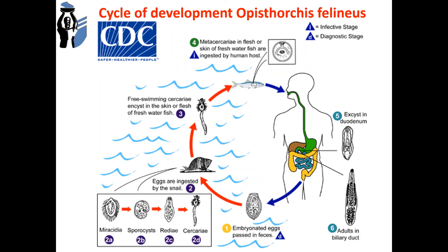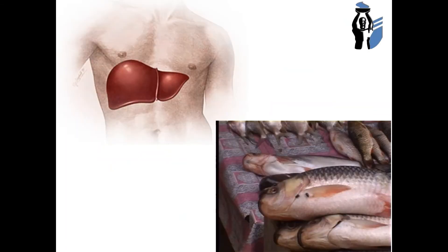A human becomes infected when eating low-salted, slightly dried, insufficiently heat-treated, or raw fish. After about a month, the parasite reaches sexual maturity. The clinical symptoms are caused by dystrophic and necrobiotic processes in the liver. If opisthorchiasis has a long course, there is risk of cancer of the bile ducts, hepatocarcinoma, or cirrhosis. For diagnostic of opisthorchiasis, parasitological and immune methods are used: detection of eggs in smears of duodenal contents and feces during microscopy, and enzyme immunoassay.